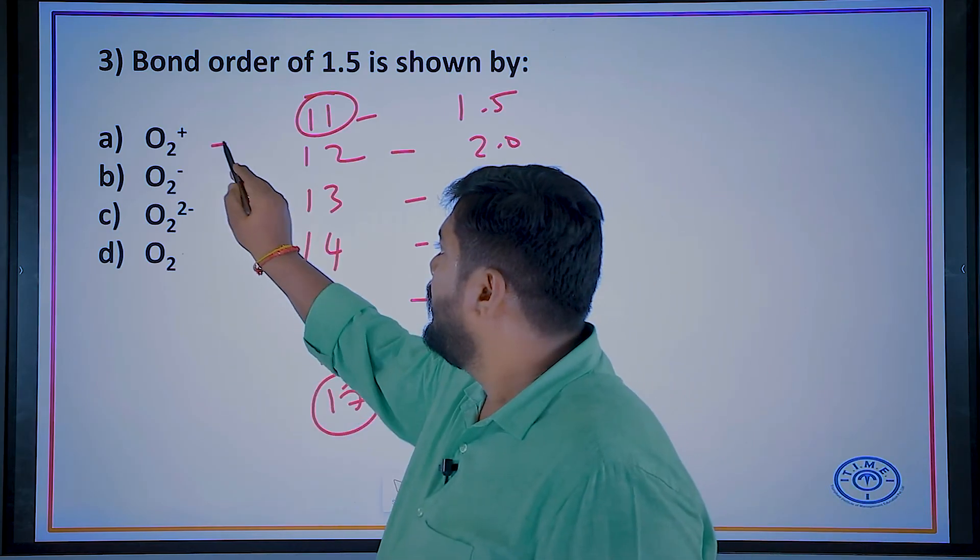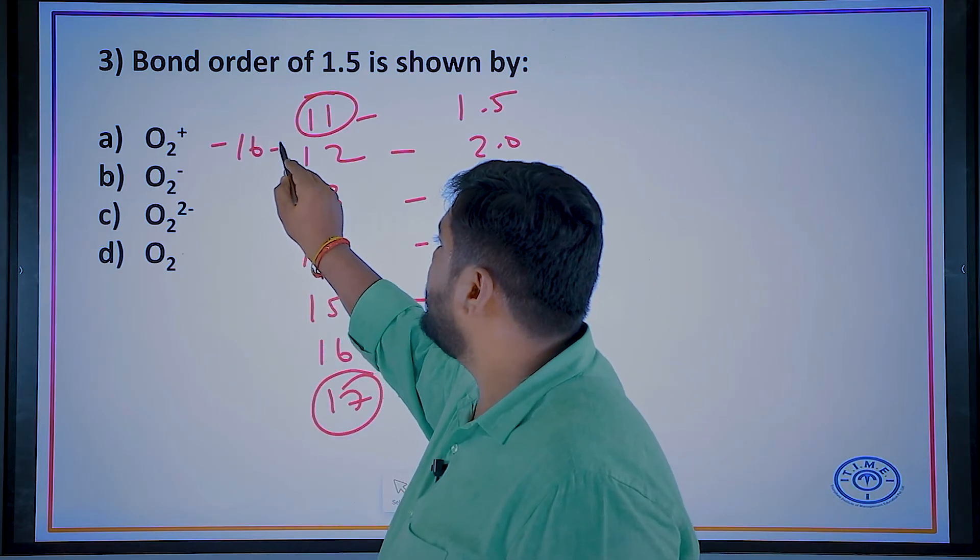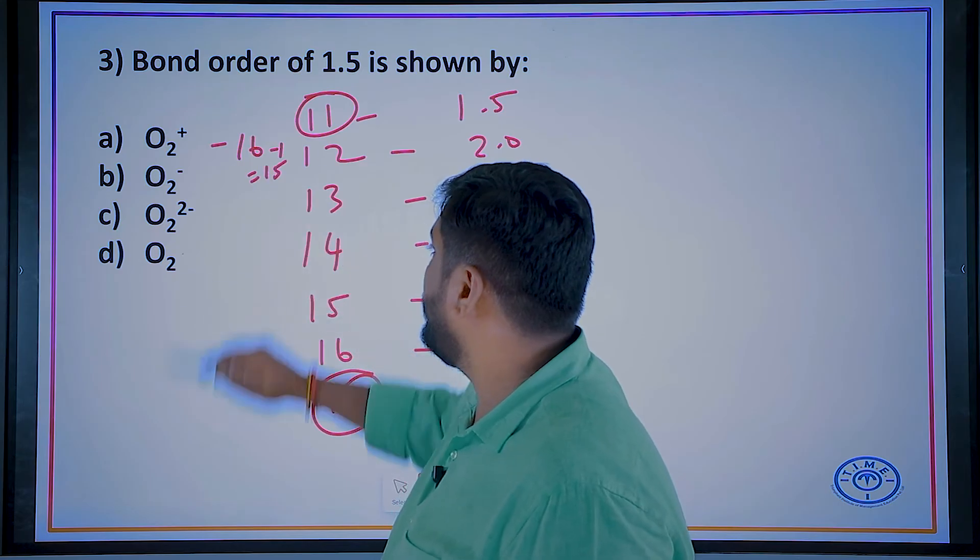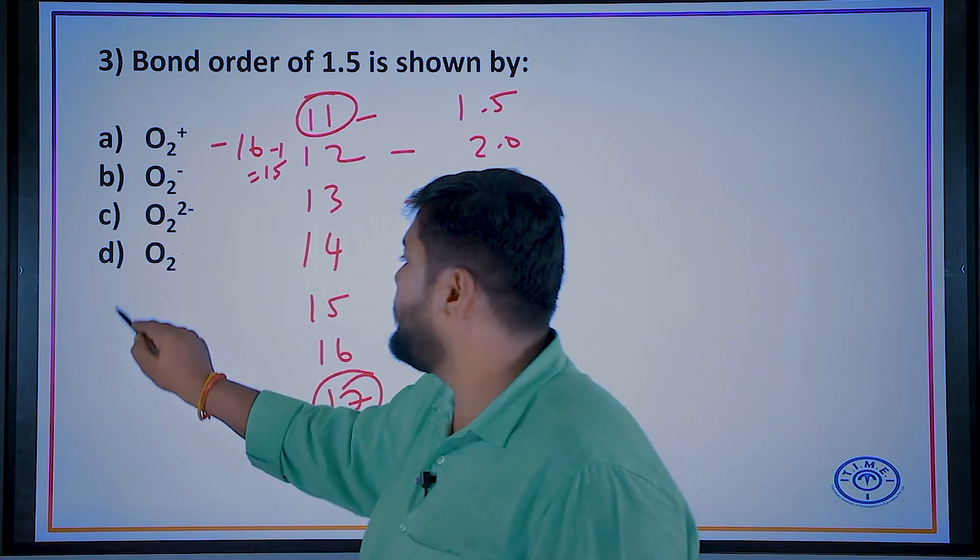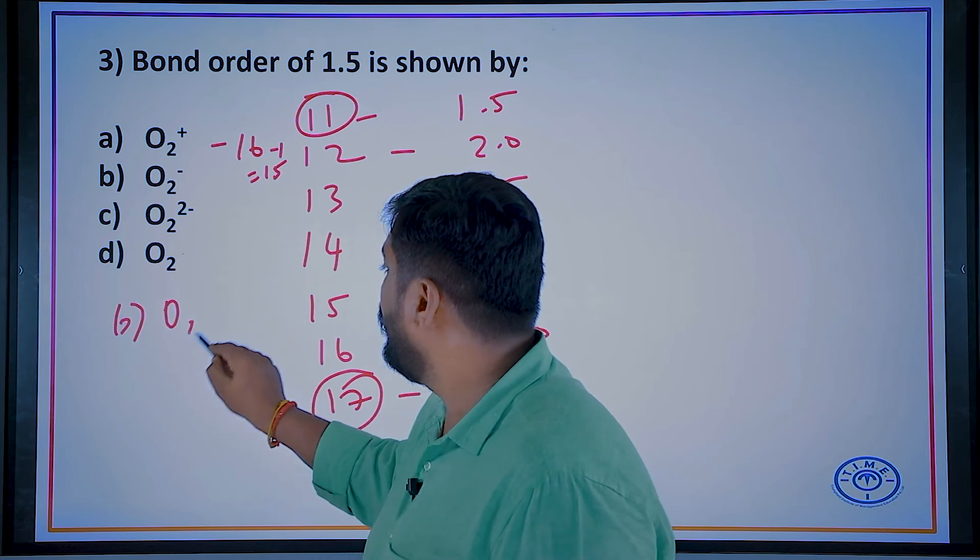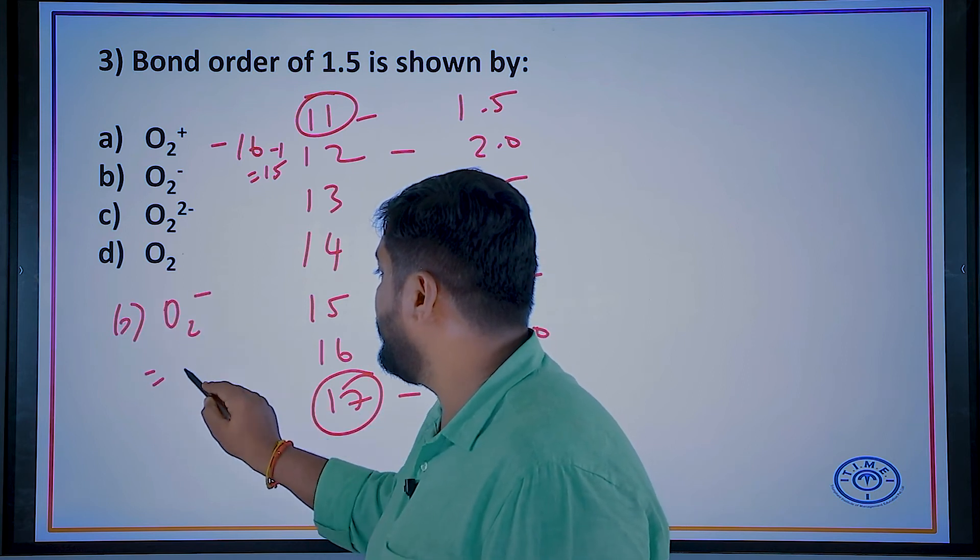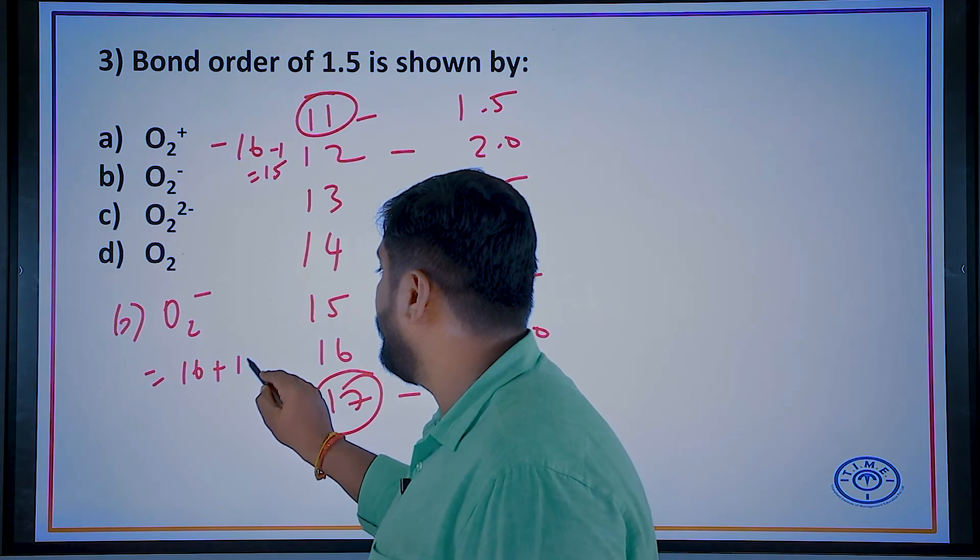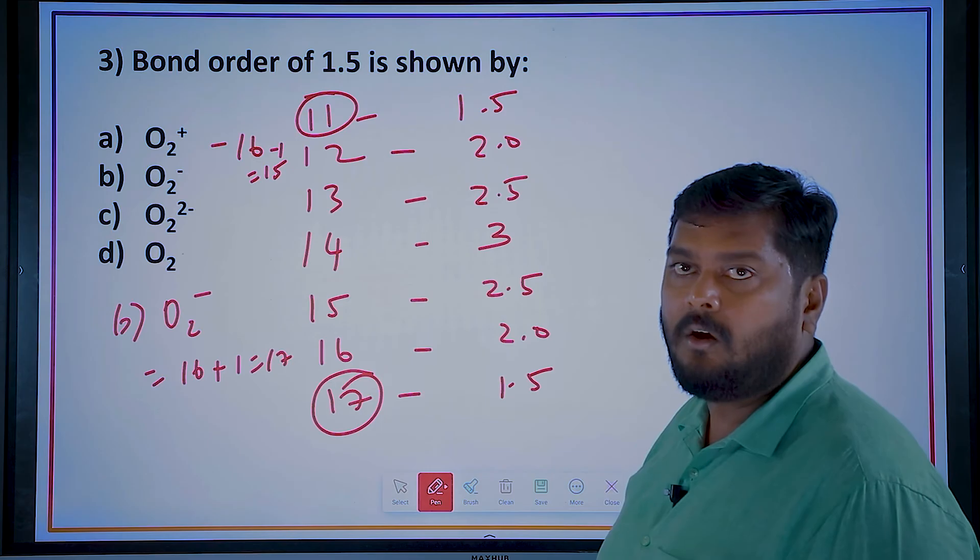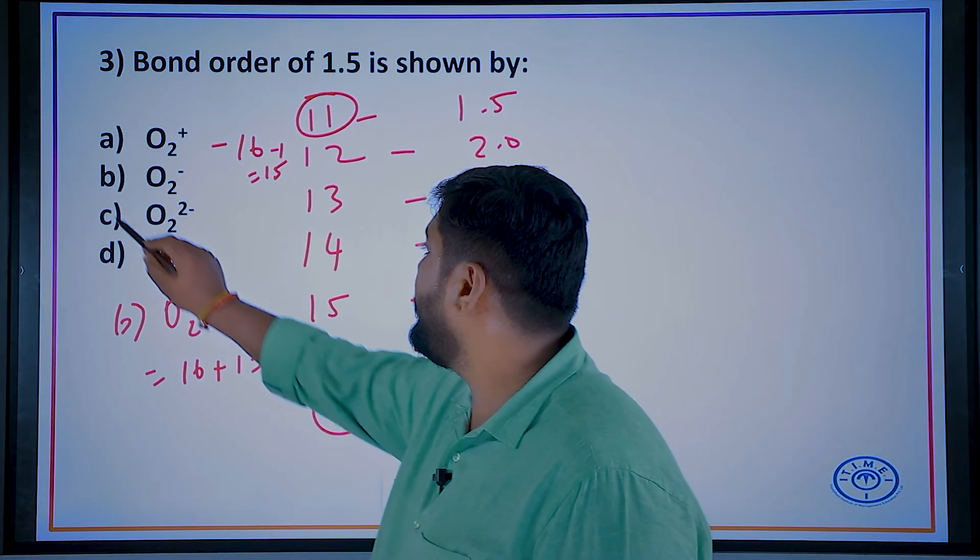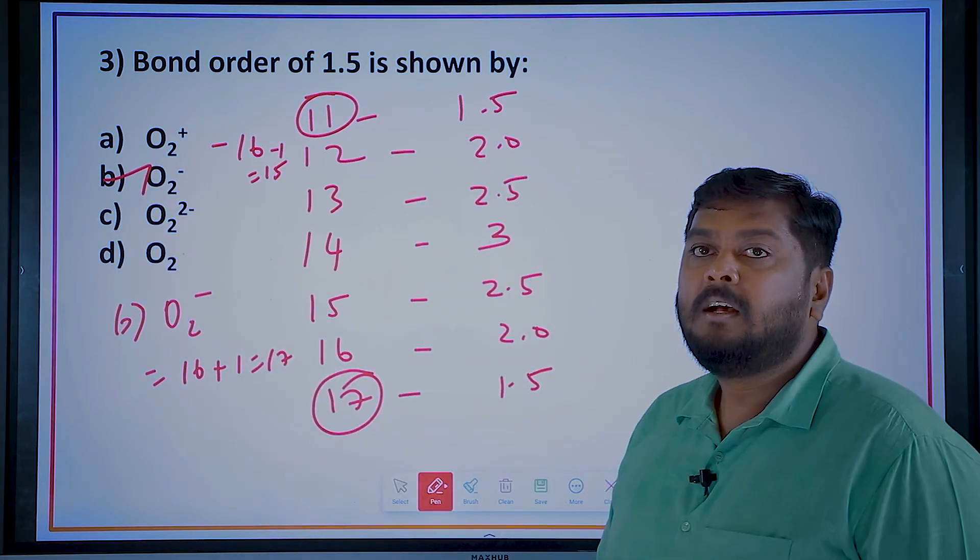O2+, O2 has 16 electrons, plus means 16 minus 1, 15 electrons. So 15 electrons has 2.5. And option B, O2 minus. O2 minus, oxygen has 16, minus means you have to add 1. So 17 electrons. 17 electrons will have bond order 1.5. So this is going to be my option.